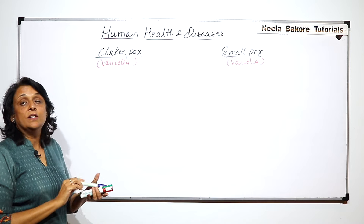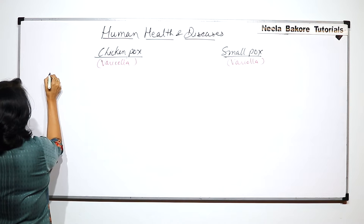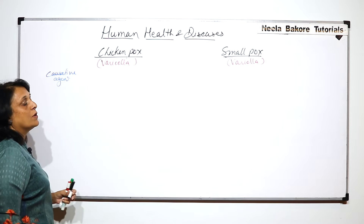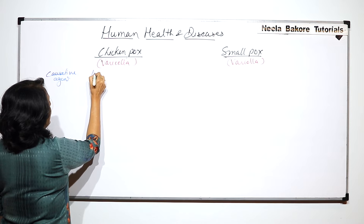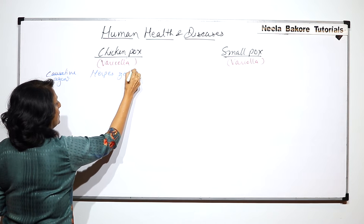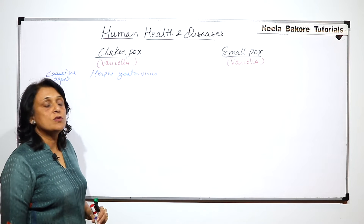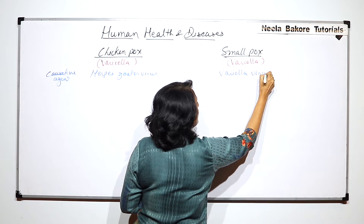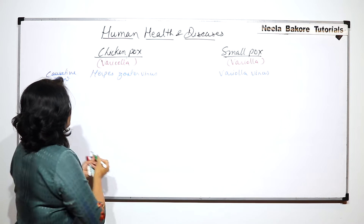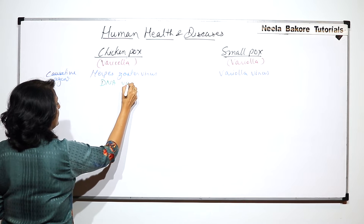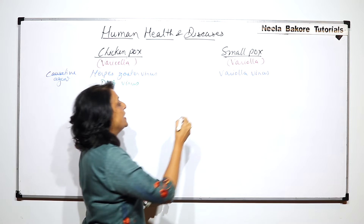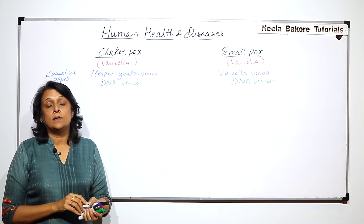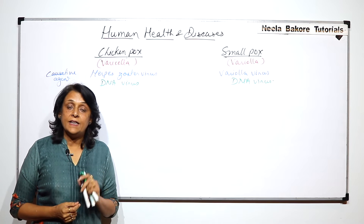The causative agent — the virus — in case of chickenpox is known as varicella virus, also known as herpes zoster virus. In case of smallpox, the causative agent is known as variola virus. Both these viruses are DNA viruses, meaning the genetic material is DNA. So both are viral diseases caused by DNA viruses.